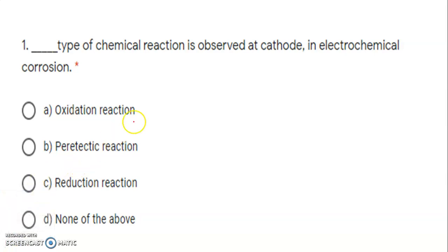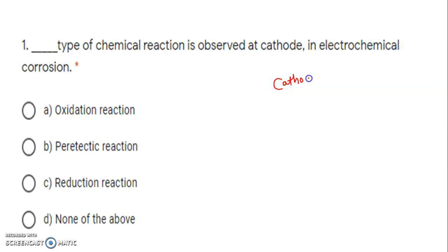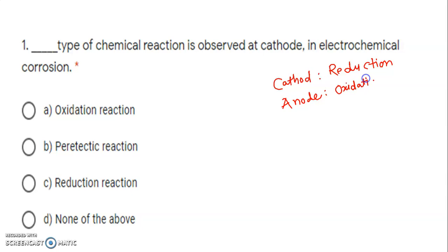First question: type of chemical reaction observed at cathode in electrochemical corrosion. In electrochemical corrosion, there is a formation of cathodic and anodic areas. At cathode, reduction reaction takes place, and at anode, oxidation reaction occurs. Remember, at anode, oxidation means corrosion.